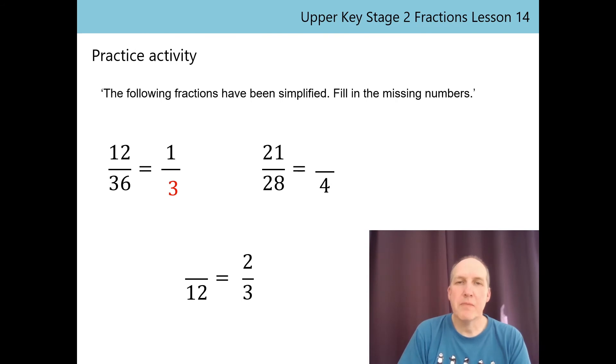What did you notice? Did you get the connection between the denominators in 21/28? 28 has been divided by 7 to get 4. So the numerator 21 must also be divided by 7, which is 3. 21/28 simplifies to 3/4.